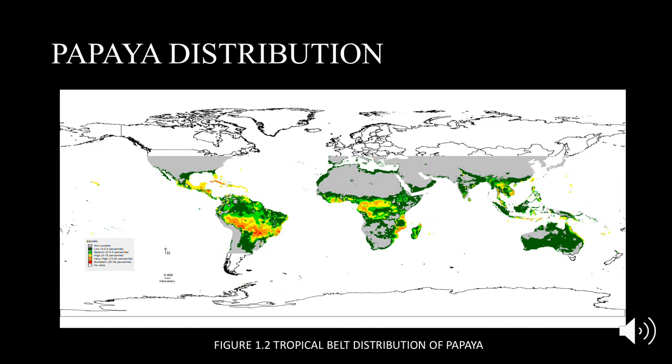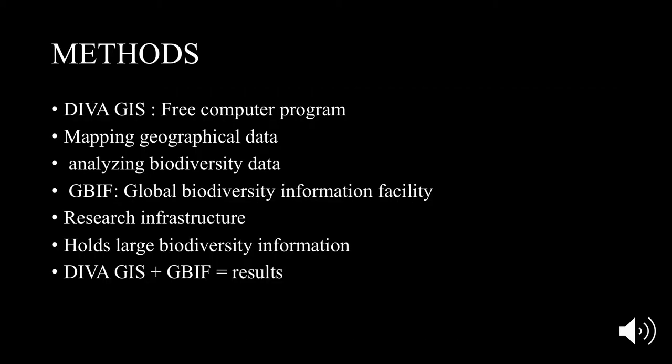This is due to the fact that warmer conditions are situated near the equator. As a result, we are left with a tropical distribution belt. In order to see the global distribution of papaya, I made use of DivaGIS. DivaGIS is a free computer program that is used for mapping geographical data as well as analyzing biodiversity data.